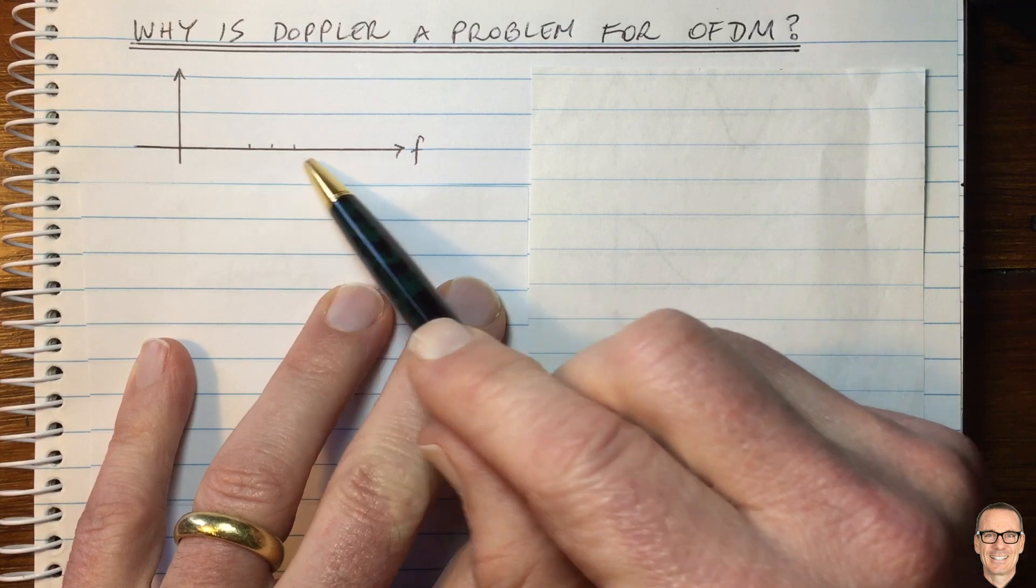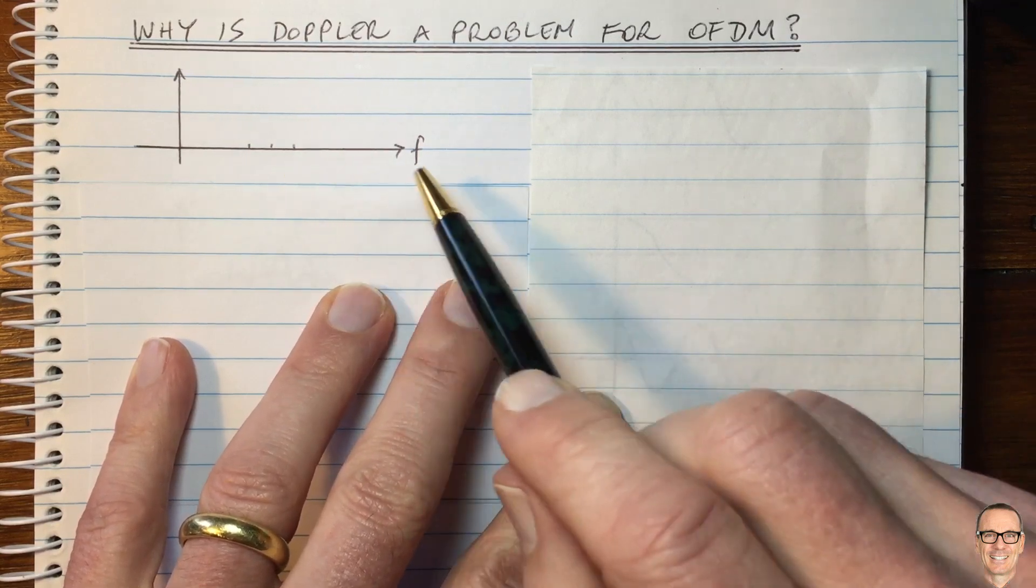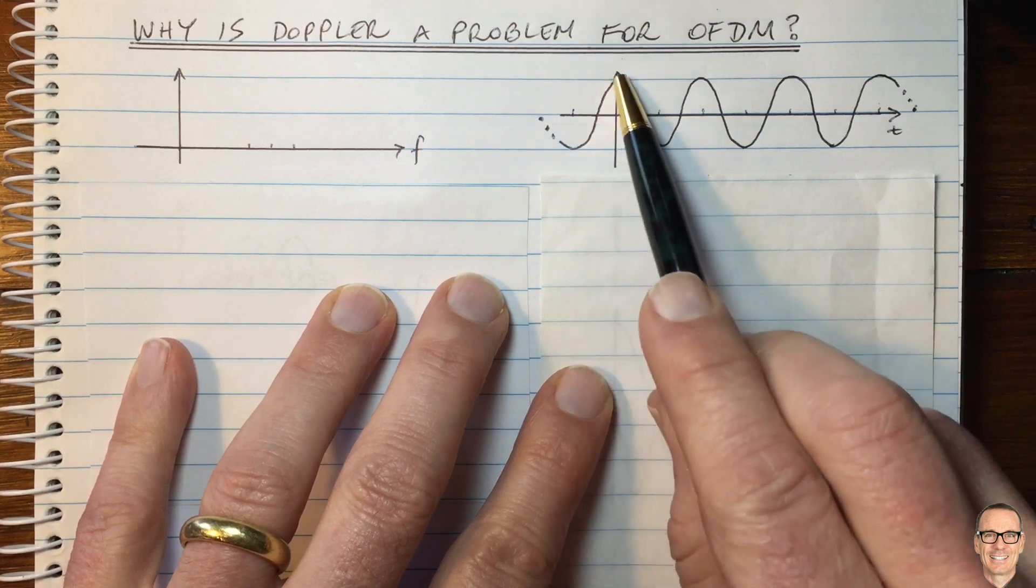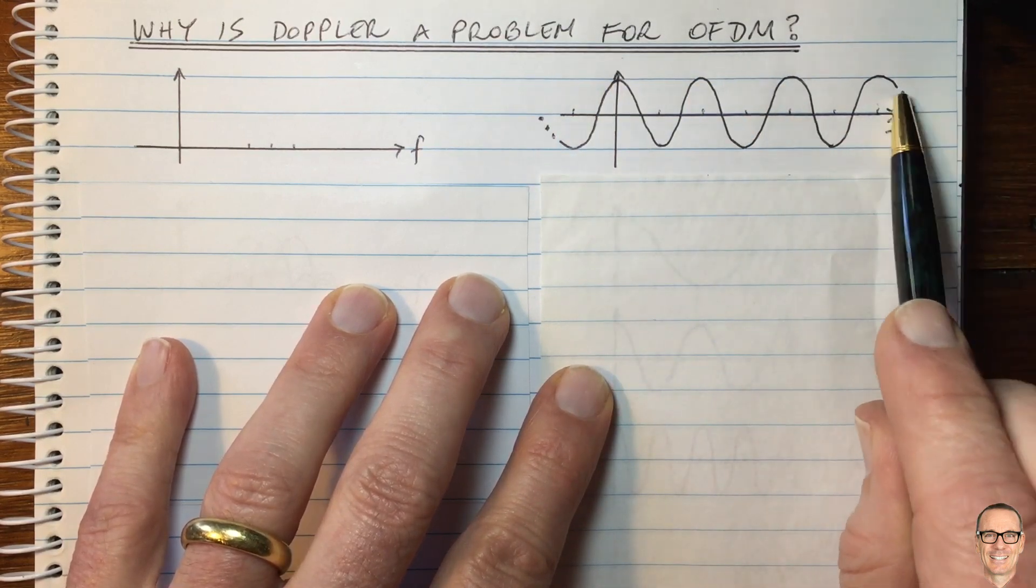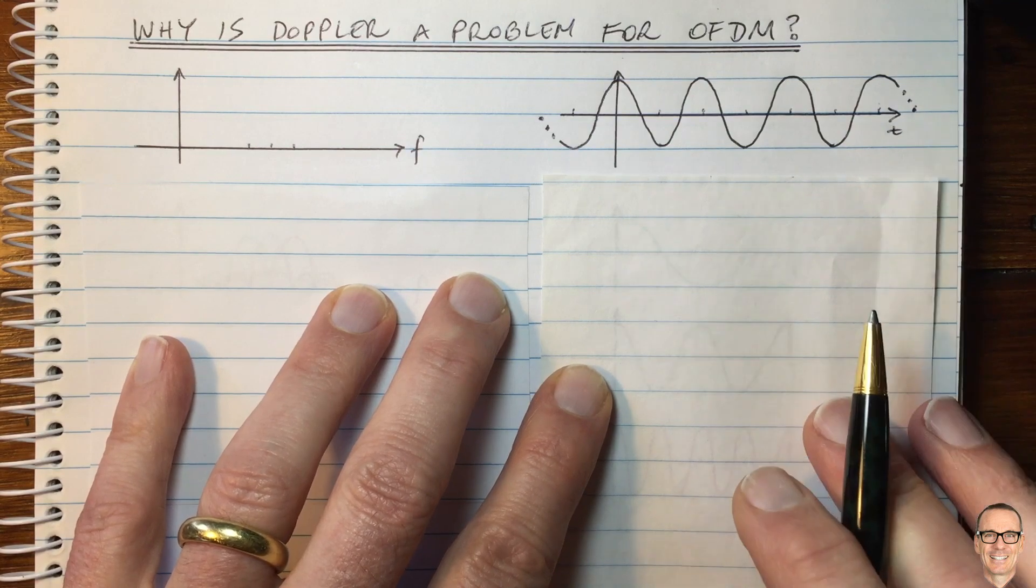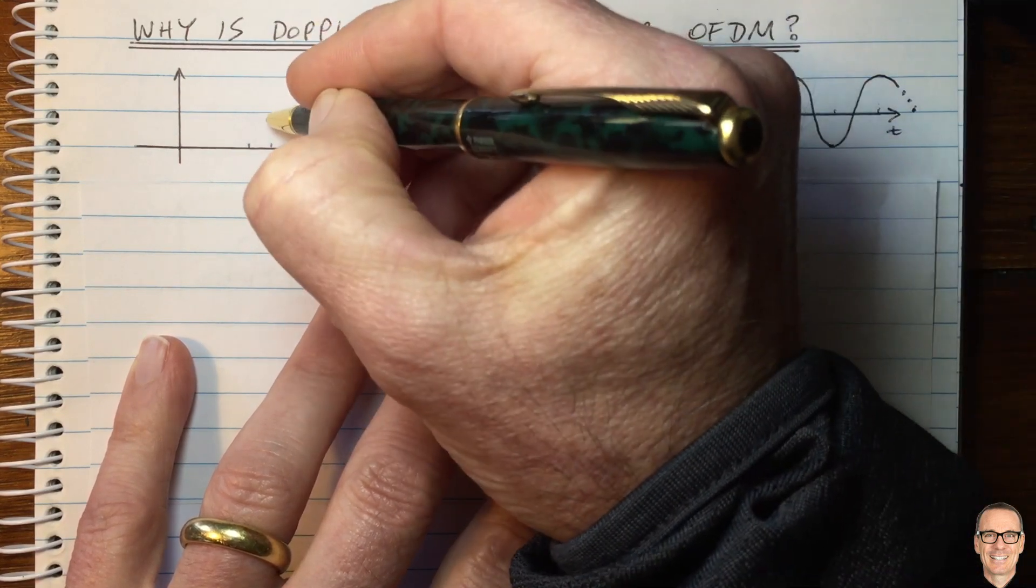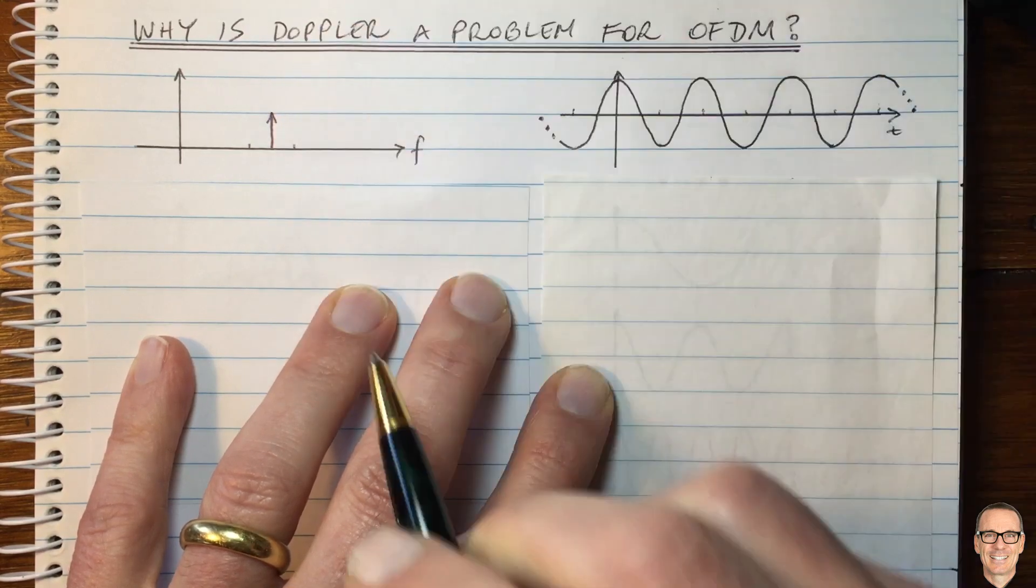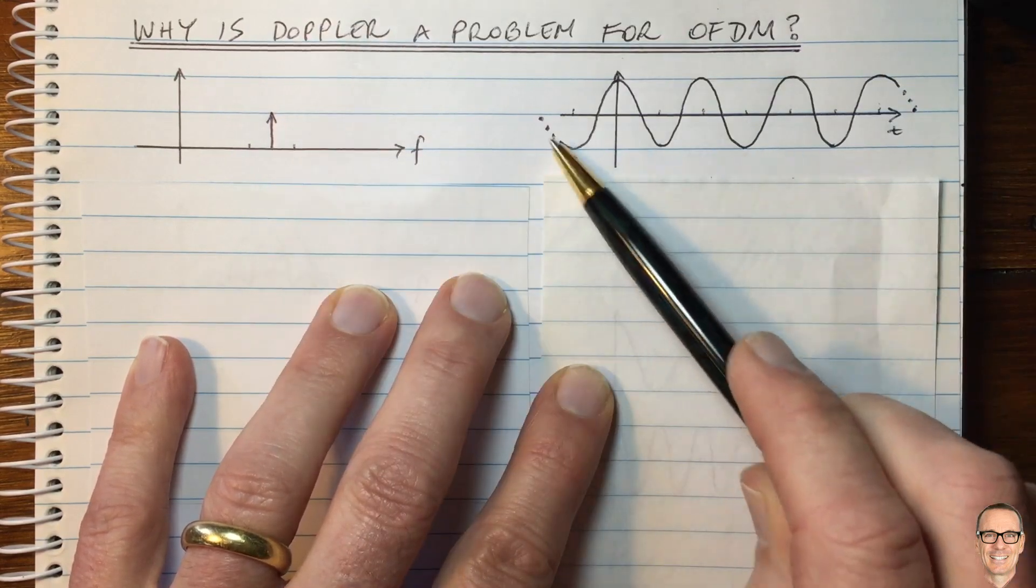So if we were to send a single tone forever, such as this one here, so here's a sine wave that goes forever, dot, dot, dots meaning forever, then in the frequency domain, that would be a spike, a delta function at the frequency of that waveform.